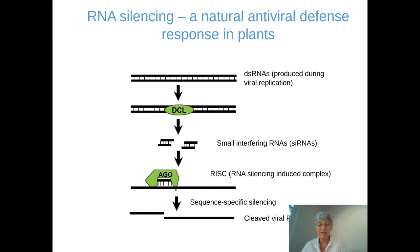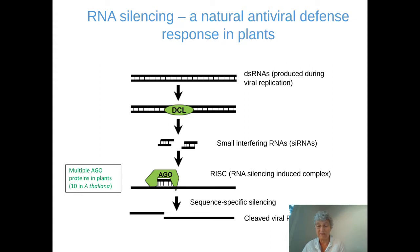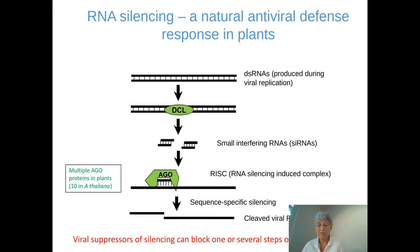This is a very simplified version of RNA silencing; there are more steps. One thing I do want to say is that there are multiple silencing pathways occurring in plants, and there are multiple AGO proteins in plants. For example, in Arabidopsis thaliana, which is a model host, there are 10 different Argonaute proteins that play roles in different pathways. And viral suppressors of silencing can block one or several steps of these pathways.